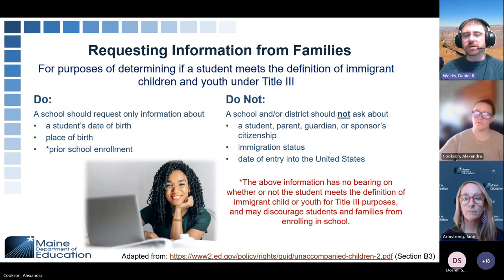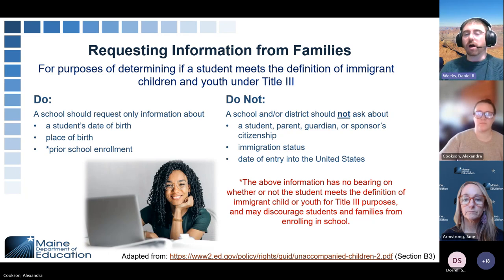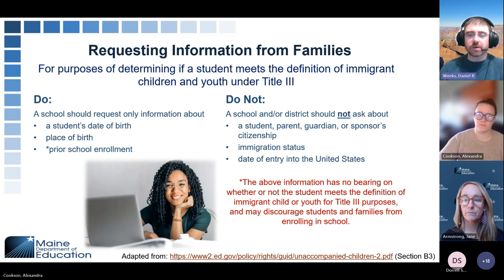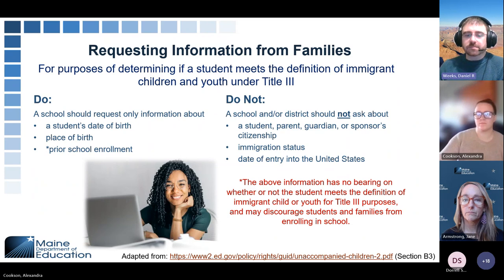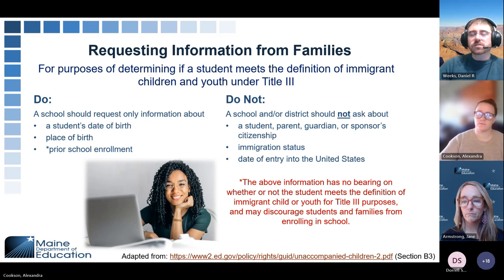When requesting information from families to determine if a student meets the definition of immigrant children and youth under Title III, you should only be requesting information about a student's date of birth, their place of birth, and prior school enrollments. Things you should not be asking about include a student's, parent's, or guardian's citizenship, the immigration status of a student, and the date of entry into the United States. The above information has no bearing on whether the student meets the definition of immigrant children and youth for Title III. We don't want to discourage students and families from enrolling in schools.